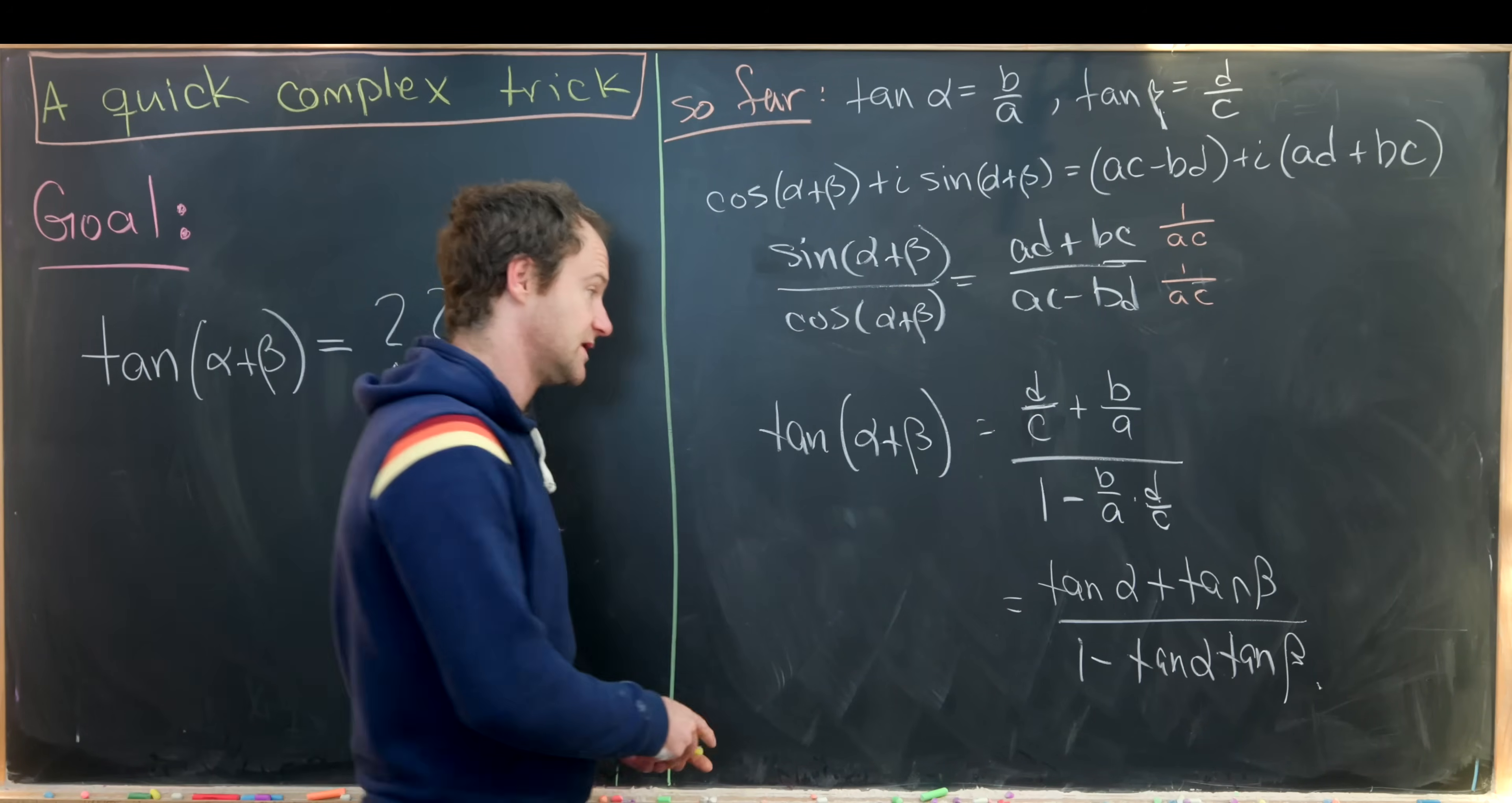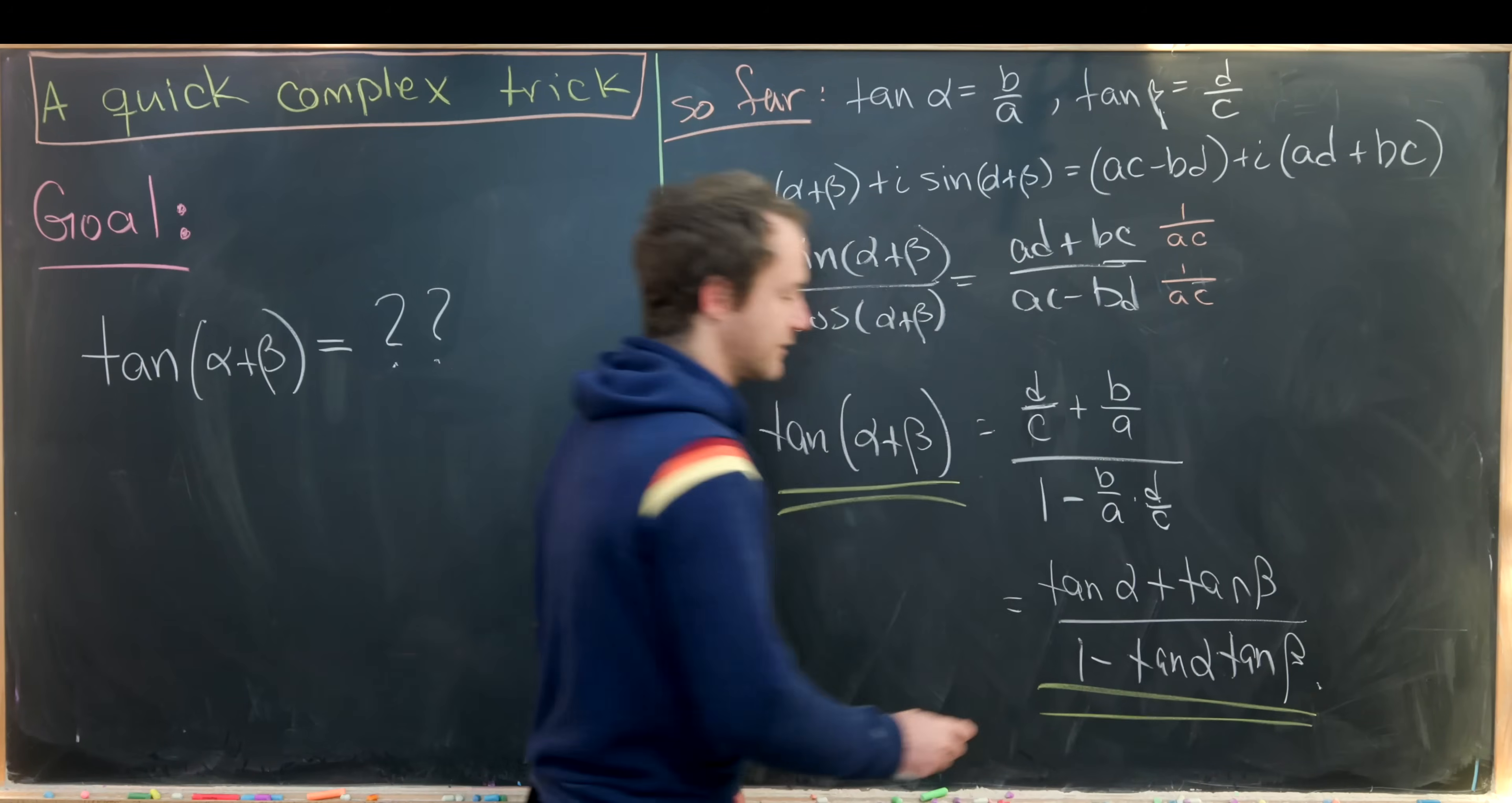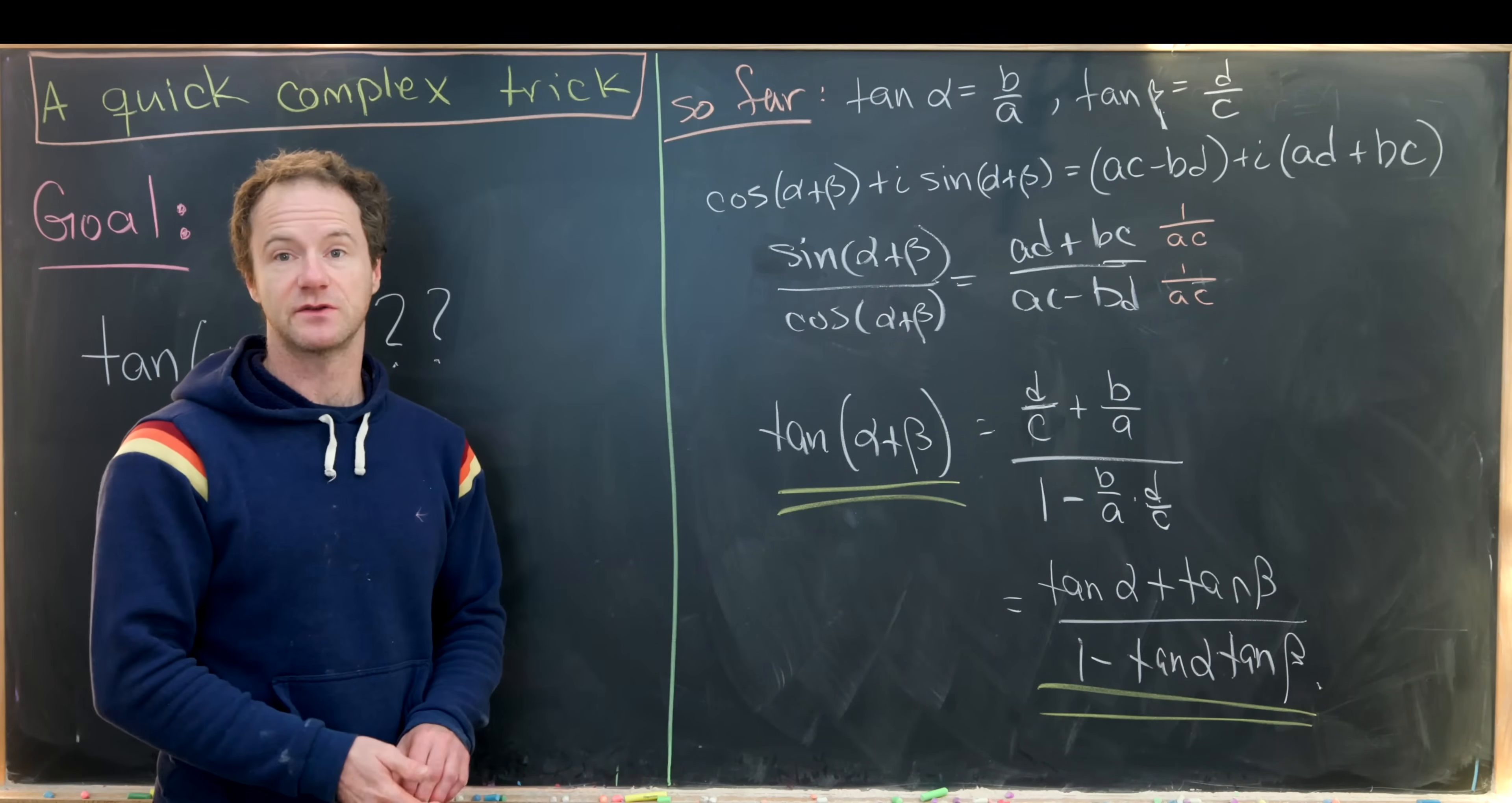But that is the classic tangent sum angle identity that we were going for. And we got there by looking at arguments of complex numbers. And that's a good place to stop.